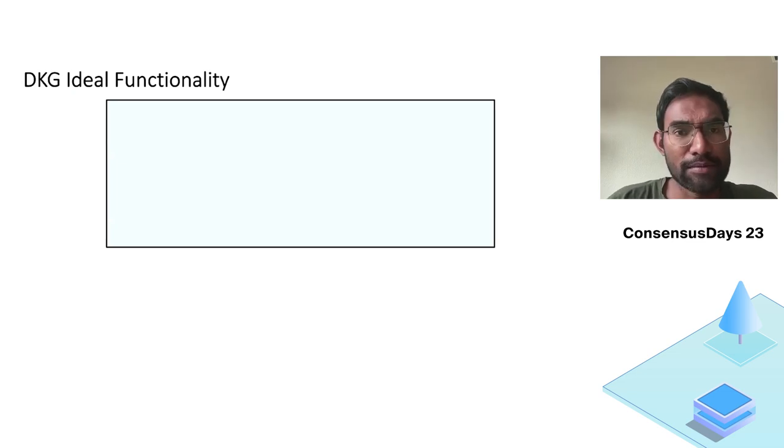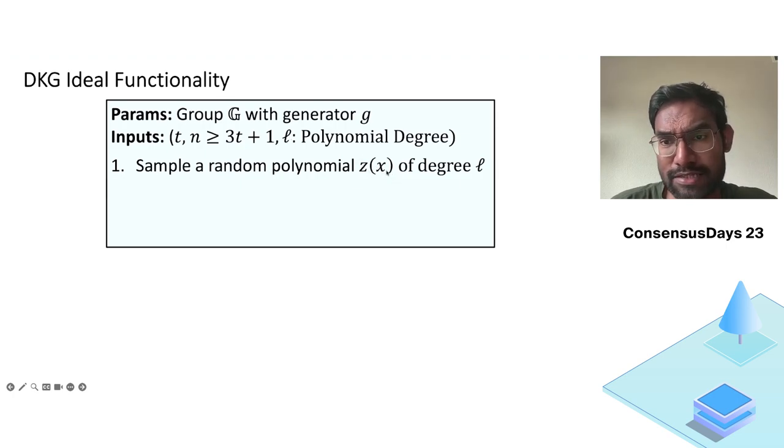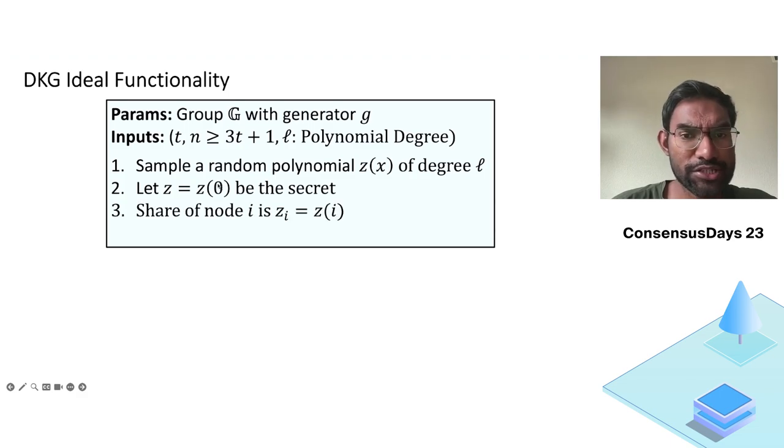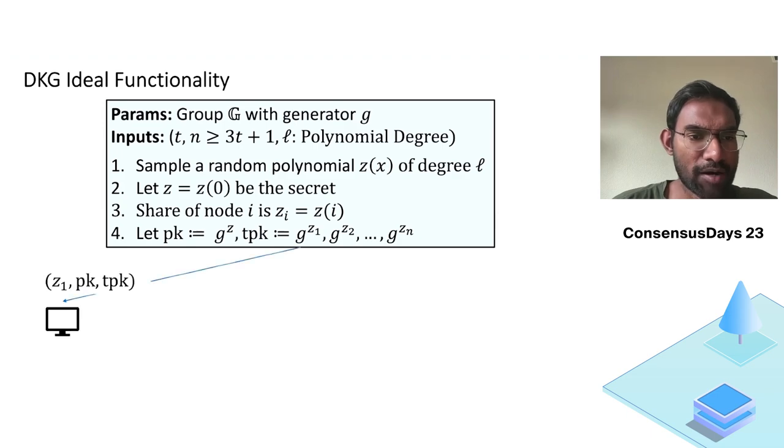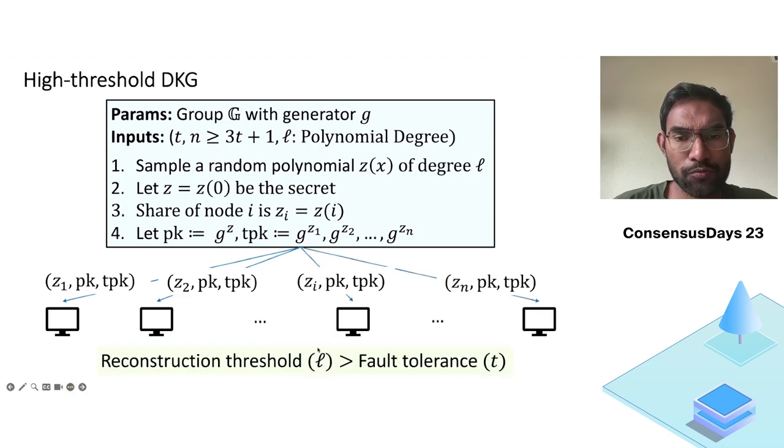So this is the DKG ideal functionality, more formally. It is parameterized by elliptic group and a generator. There are parameters t which is the number of failures and total number of nodes, and l is the degree of the Shamir secret sharing polynomial. The ideal functionality samples a random polynomial z(x) of degree l. The distributed key generation secret is the polynomial evaluated at zero. And share of each party is the polynomial evaluated at i. Party one will get evaluated at one, party two will get evaluated at two, so on and so forth. And this is the high threshold distributed key generation when the reconstruction threshold l, the degree of the polynomial, is larger than the fault tolerance t, the number of failures in the system.